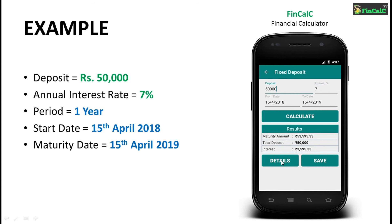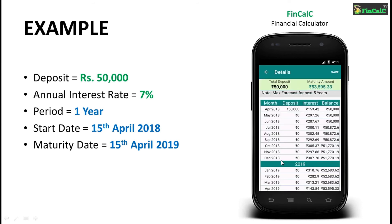If we check the details of this calculation, we also get to see the interest earned on each month throughout the tenure of 1 year. Compounding takes place after every 3 months from the start of the tenure. Compounding is gaining interest on already earned interest, and you can see this in the months of July, October and January, where the interest amount is added to the principal amount and you earn interest on that amount. If you really want to build your wealth, you need to understand the power of compounding. More frequent compounding throughout the year means more interest money.